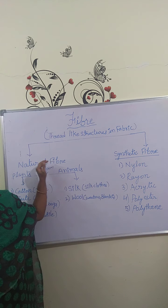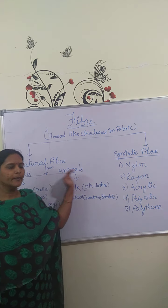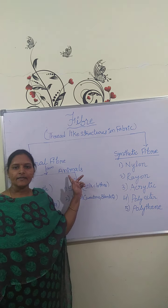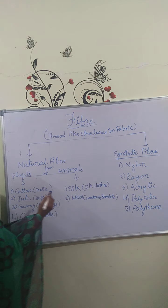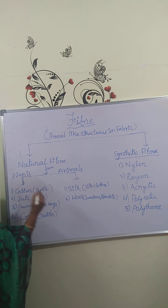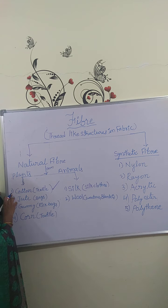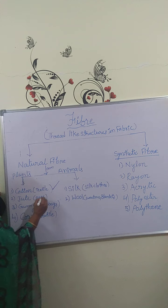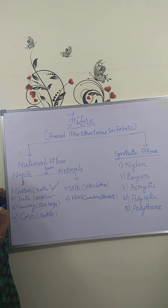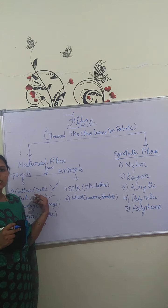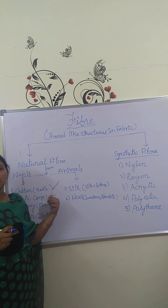Natural fiber is again divided into two types based on how it is obtained: first, from plants, and second, from animals. From plants, for example, we get cotton. We use cotton dresses in summer season to protect us from the sun and heat. We get cotton fiber from cotton plants. The second plant-based fiber is jute. Jute fiber is obtained from jute plants.